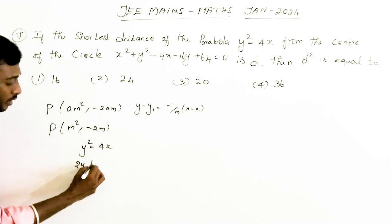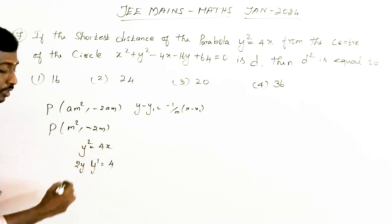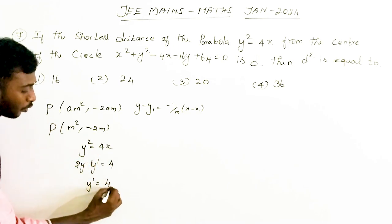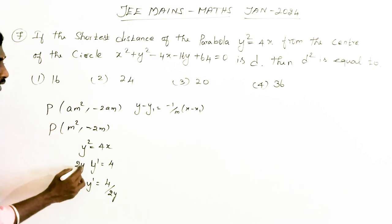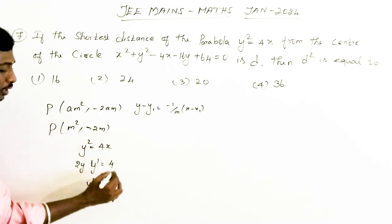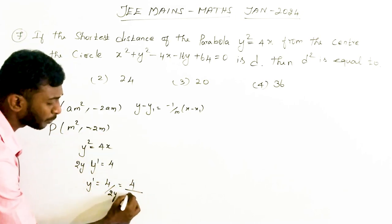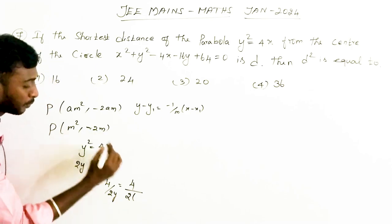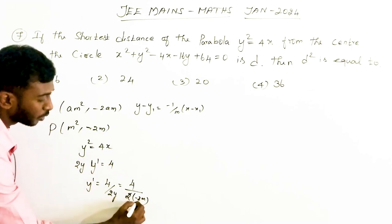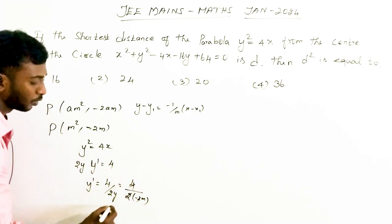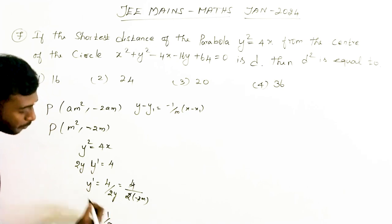Differentiating, we get 2y·(dy/dx) = 4, so dy/dx = 4/(2y). Substituting y = -2m, we get dy/dx = 4 / (2 × (-2m)) = -1/m. So the slope of the tangent is -1/m, and the slope of the normal is m.